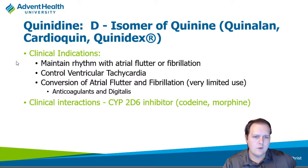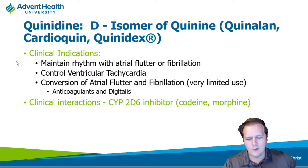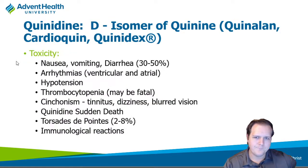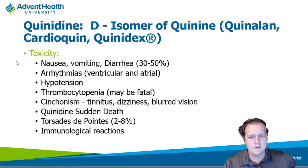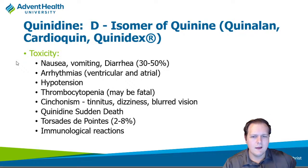For drug interactions, quinidine is a CYP2D6 inhibitor, which can affect drugs like codeine and morphine — if you're not metabolizing morphine well, you can have higher levels leading to CNS and respiratory depression. There's a lot of toxicity with these drugs, which is why we don't use them as frequently. You can see nausea, vomiting, and any of these drugs can themselves induce arrhythmia. Hypotension from the alpha blocking effects, and thrombocytopenia can develop, which can be fatal. There's a very classic side effect called cinchonism — named after the cinchona tree — a trifecta of unique side effects.